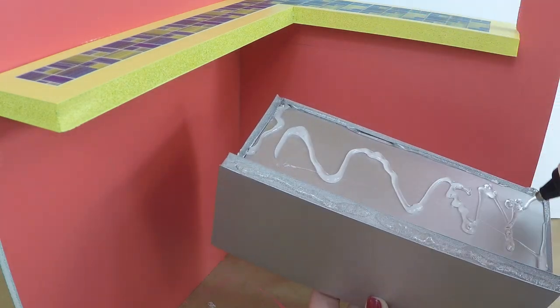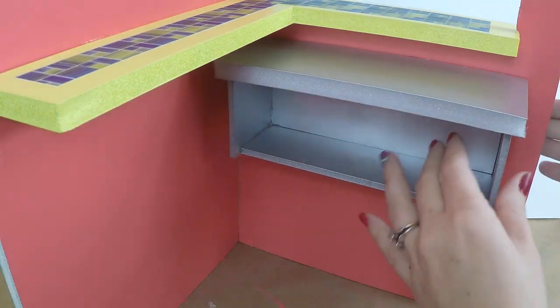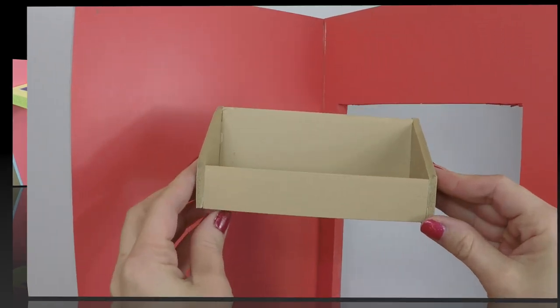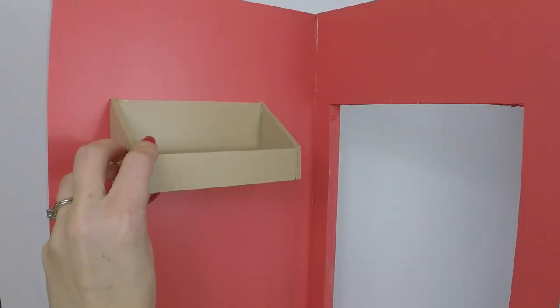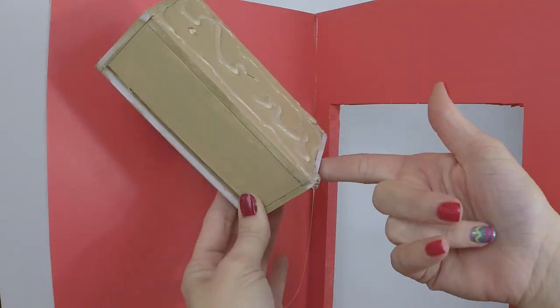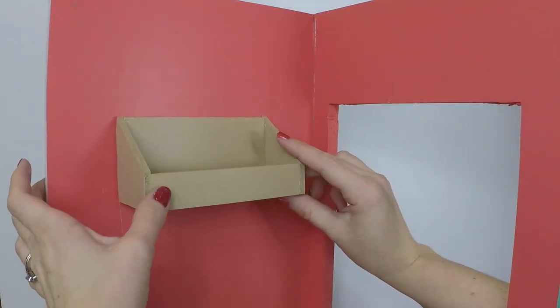Completely cover the back in hot glue, and just press it flush to the wall. Do the same thing for the bread basket. Mark where you want it on the wall, add hot glue to the back, and press it to the wall until it's completely dried into place.